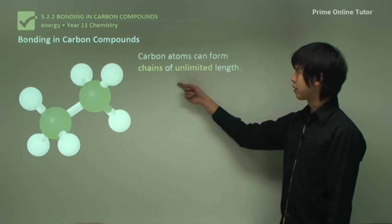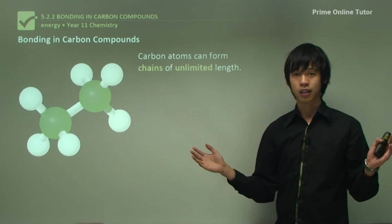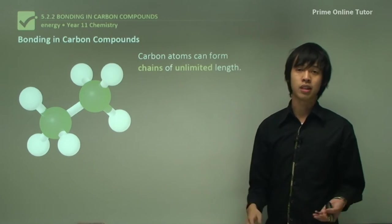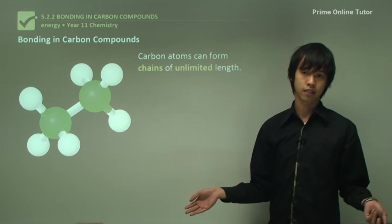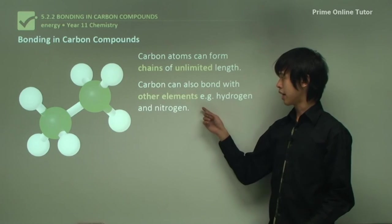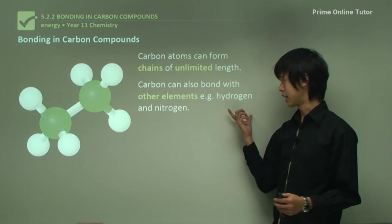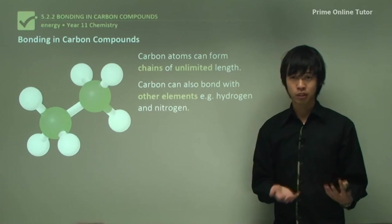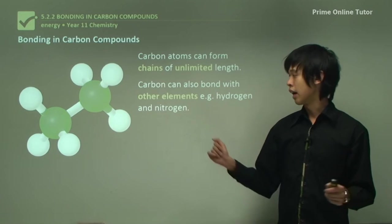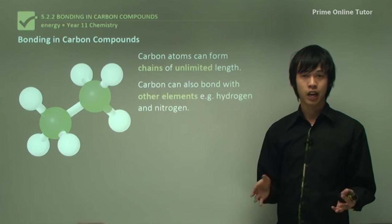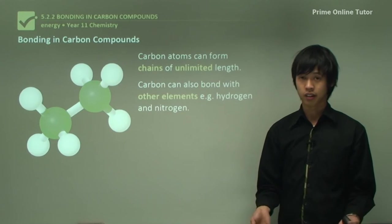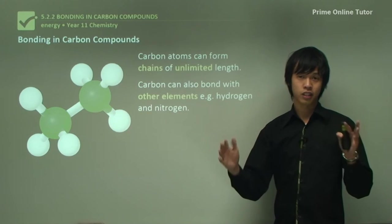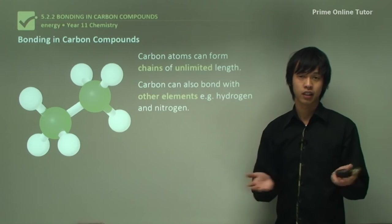Carbon atoms can form chains of unlimited length — from a very simple two-carbon chain, up to chains millions of carbons long, like in plastics. Carbons can also bond with other elements; hydrogen is particularly important for industry. Fuels are all hydrocarbons — hydrogen and carbon bonded together in different chain lengths. Plastics are mostly hydrogen and carbon as well, along with oils and various other industrial chemicals, forming the basis of much of our chemistry.